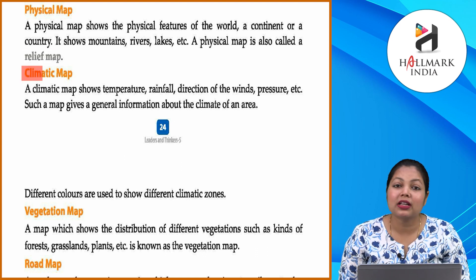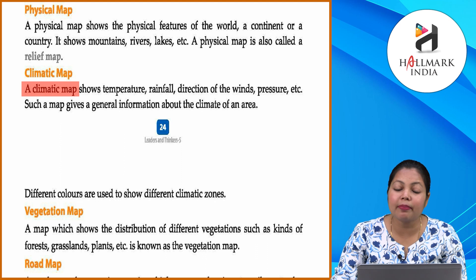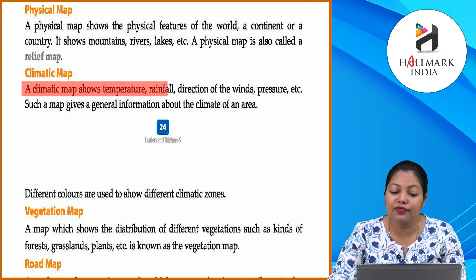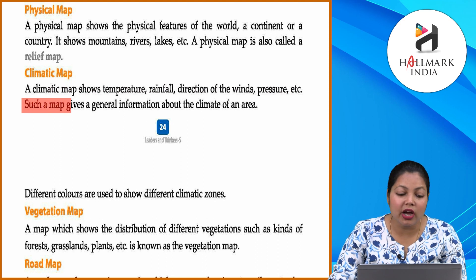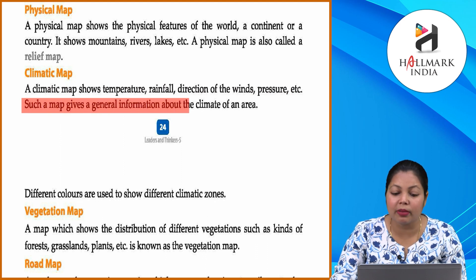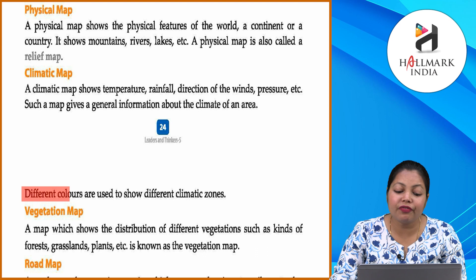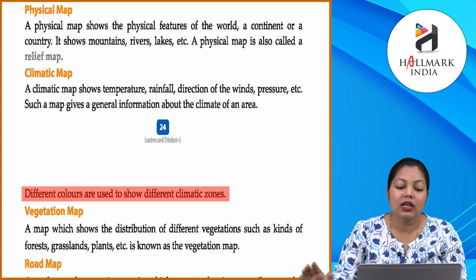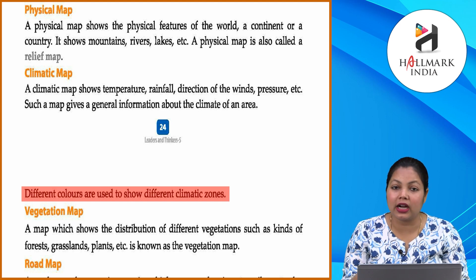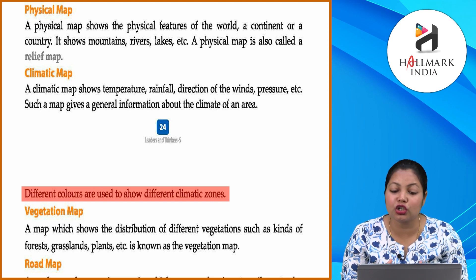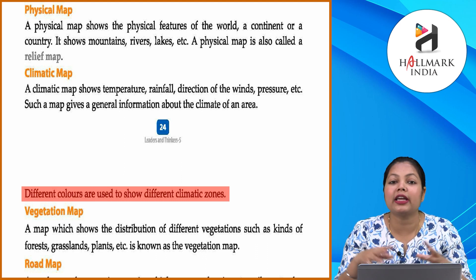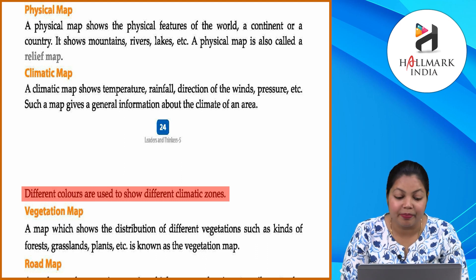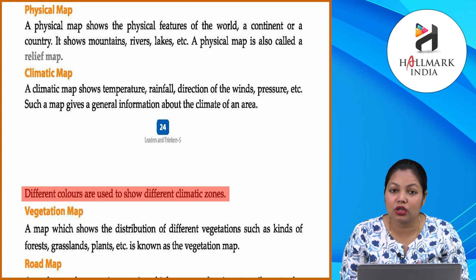Climatic map: A climatic map shows temperature, rainfall, direction of winds, pressure, etc. Such a map gives general information about the climate of an area. Different colors are used to show different climatic zones. Climatic map jo hota hai wo kisi bhi area ka temperature, rainfall, direction of winds, pressure — yeh sari chizein dikhata hai. Different colors ka use kiya jata hai different climatic zones ko explain karne ke liye.